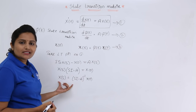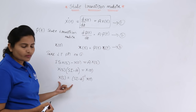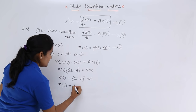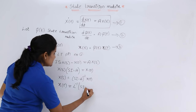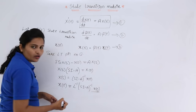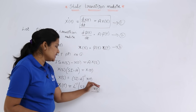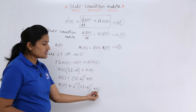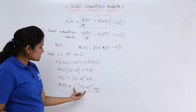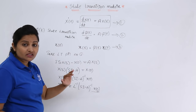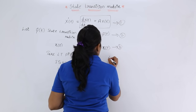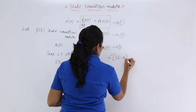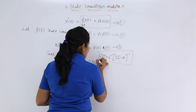Taking the inverse Laplace transform of both sides to get back to the time domain: x(t) = L⁻¹{(sI − A)⁻¹}·x(0). Comparing this with x(t) = phi(t)·x(0), we conclude that phi(t) = L⁻¹{(sI − A)⁻¹}. This is the state transition matrix.